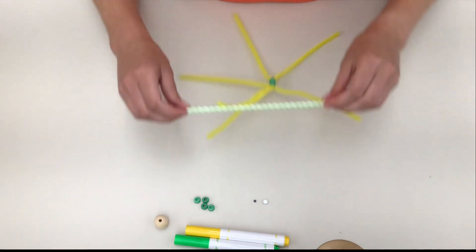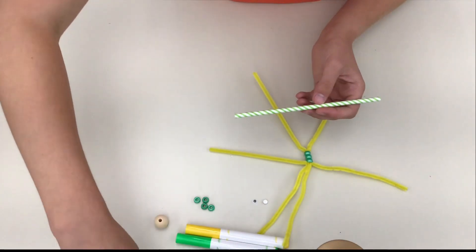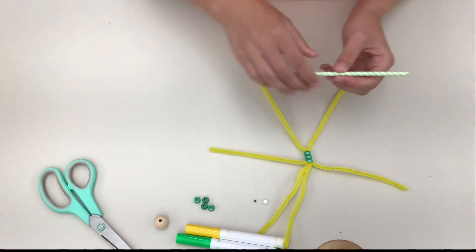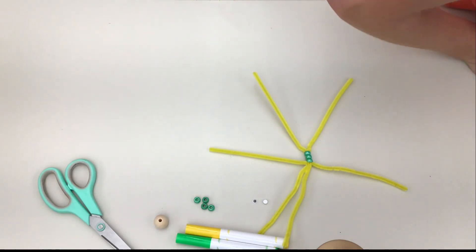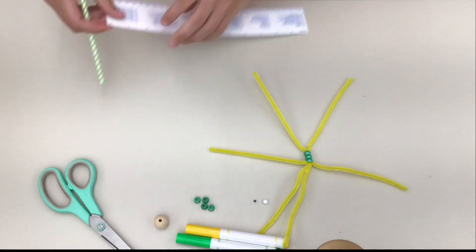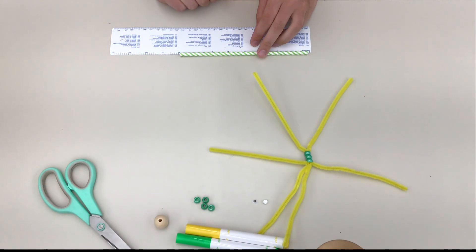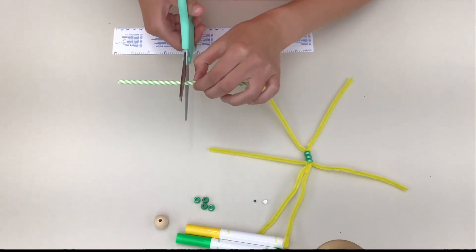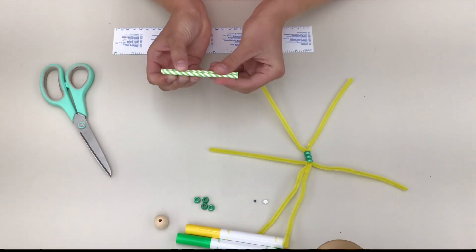Now it's time to make the arm and leg segments. Take your straw and cut it into eight equal-sized pieces. Your straw is almost eight inches long, so they'll each be about an inch long, but it's not exact. You might need to use a ruler and measure it out, find the middle of your straw, and then cut it in the middle, and then cut each of those halves in half, and then cut each of those halves in half again.